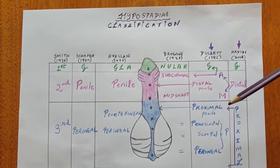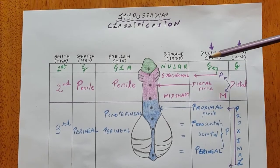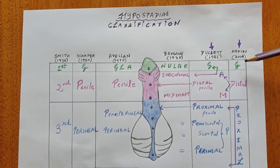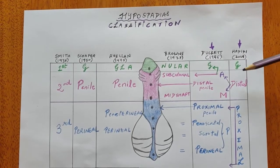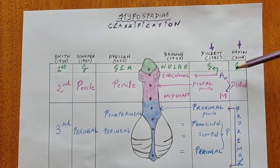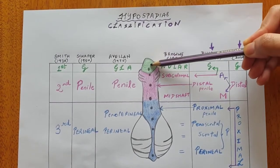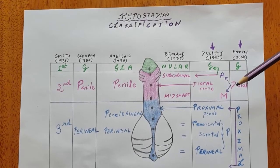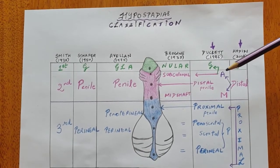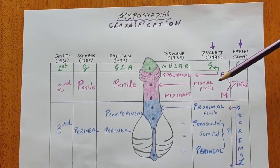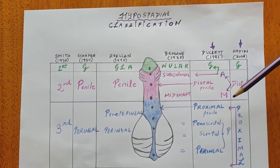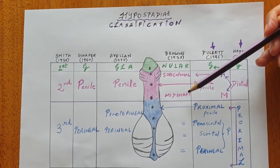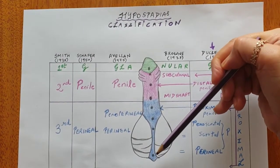Since there was a lot of overlap and confusion regarding all these terms, Hadidi in 2004 made it simple and gave three broad categories: glanular — describing only where the opening is in the glans region — then distal and proximal. The distal one consisted of the penile ones including subcoronal, distal penile, and midshaft, and the proximal one consisted of everything proximal to midshaft going into the perineal region.